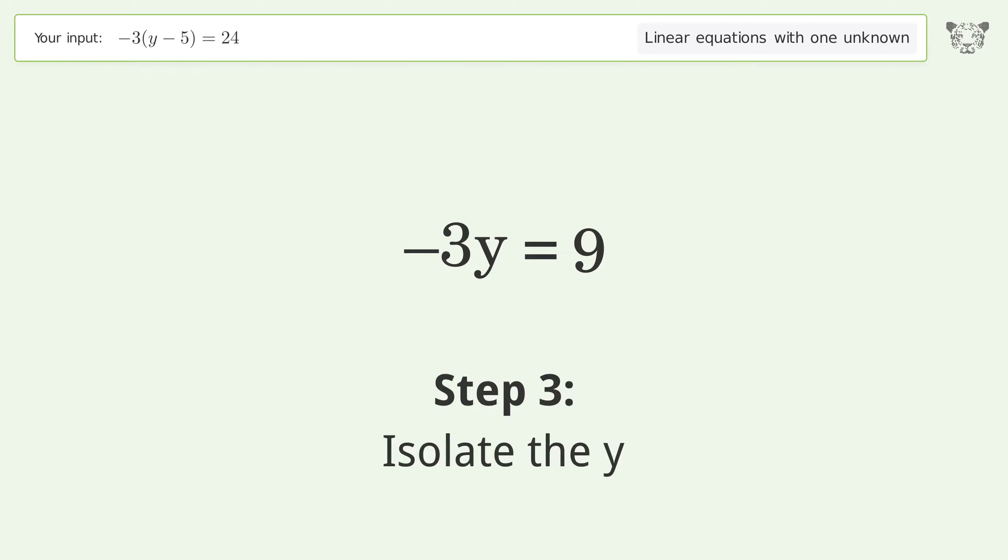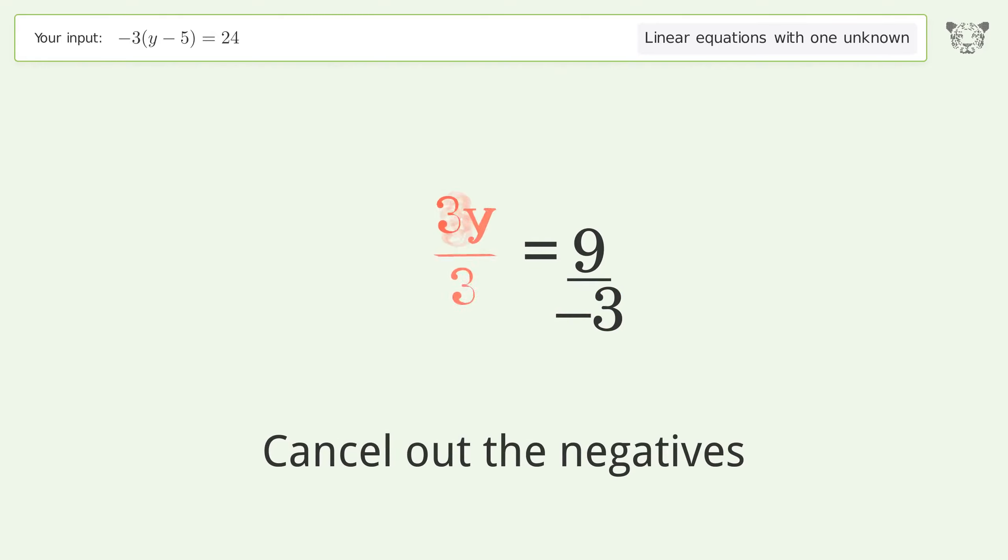Isolate the y. Divide both sides by negative 3. Cancel out the negatives. Simplify the fraction.